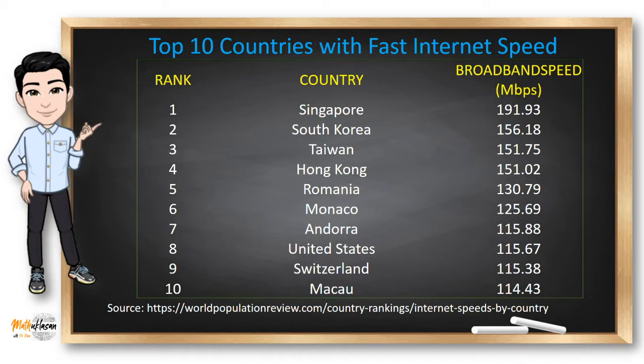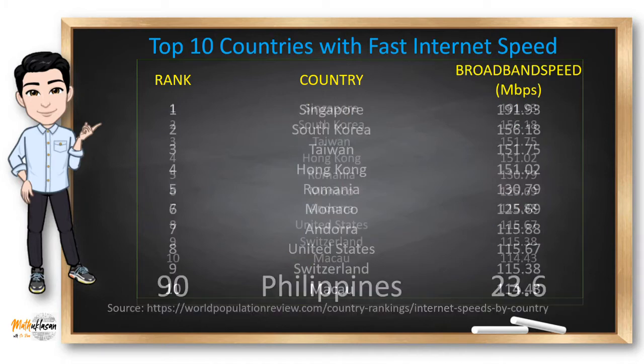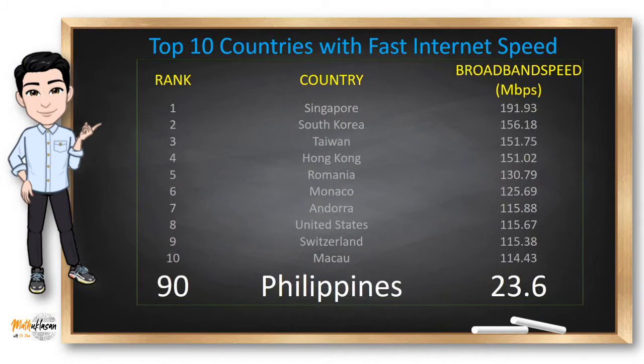Singapore is the nation with the fastest broadband download speeds. Internet speeds in this country are 191.93 megabits per second. In the Philippines, which is on the 90th rank, have an average of 23.6 megabits per second. Ang layo, di ba? Well, you might say this is not your internet speed at home.